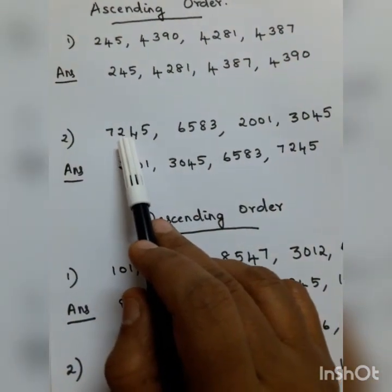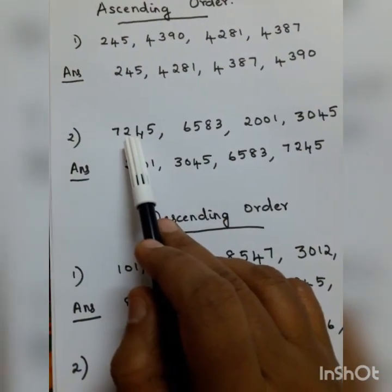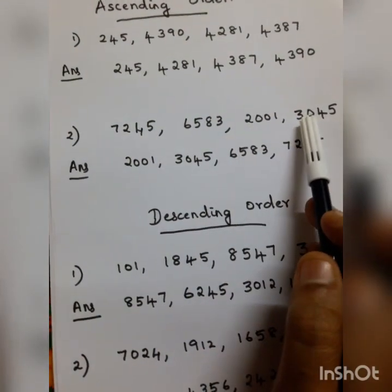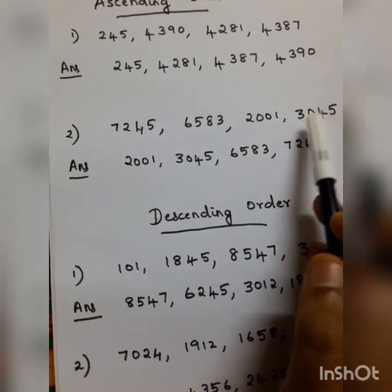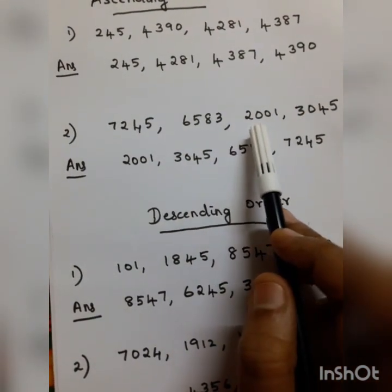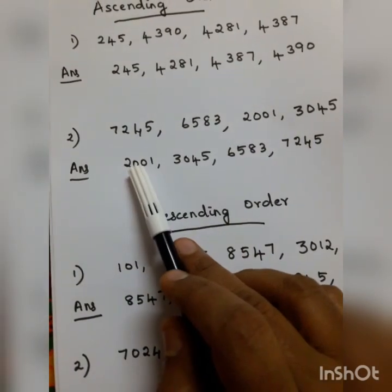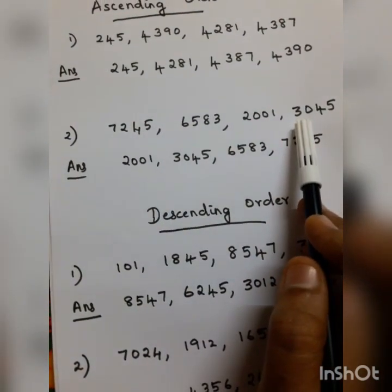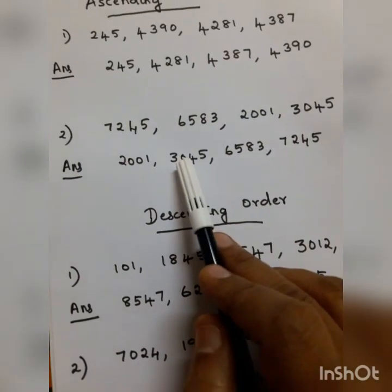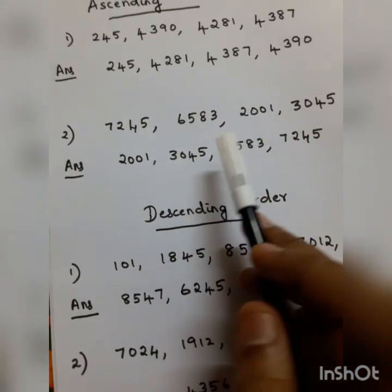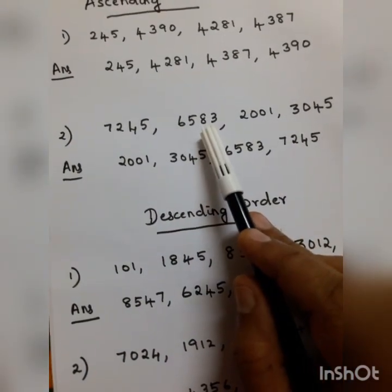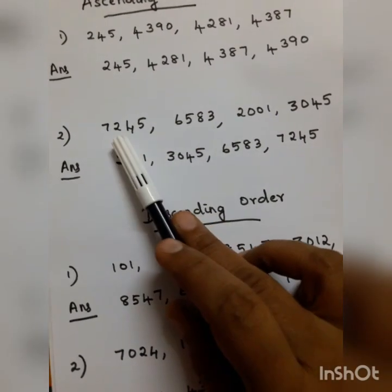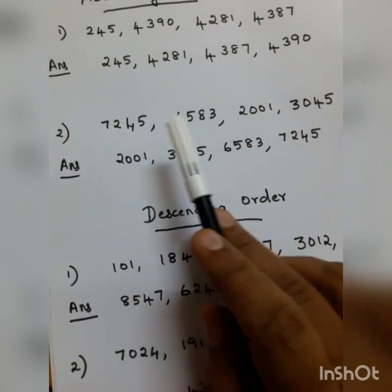In the next sum, the numbers are 7,245, 6,583, 2,001, and 3,045. The smallest number is 2,001. The second smallest is 3,045, as the first digit is 3. The third number is 6,583, and the largest number is 7,245.